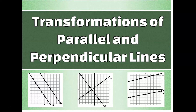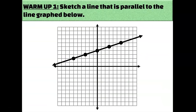Let's talk about what transformations would map parallel lines onto each other, or perpendicular lines onto each other. First, of course, we should review what it means to be parallel. Here's a line. Could you draw a line that's parallel to it? What information would you need to know about this line in order to know that it's parallel?